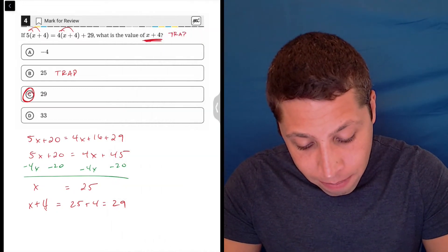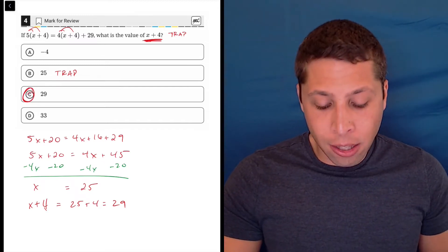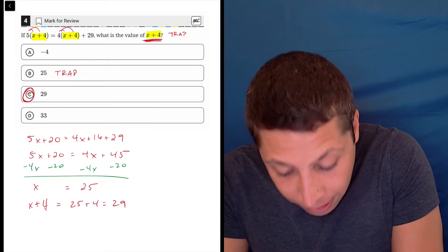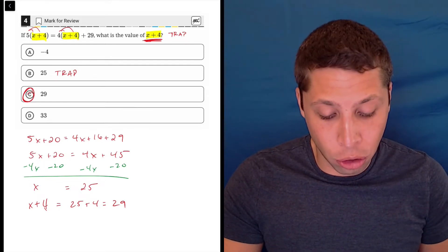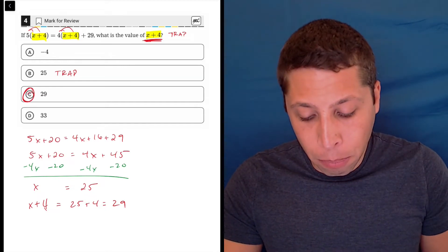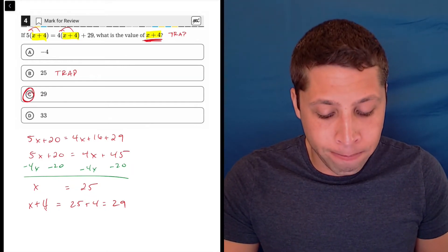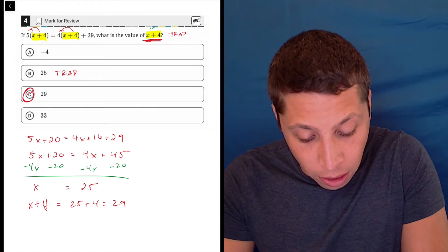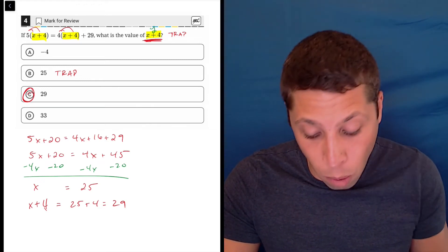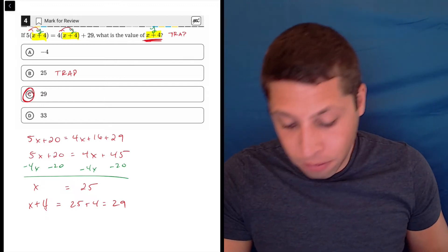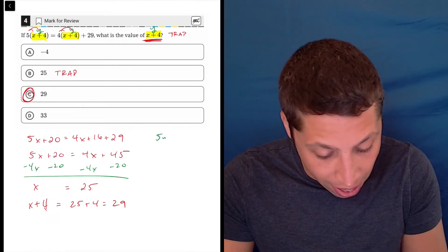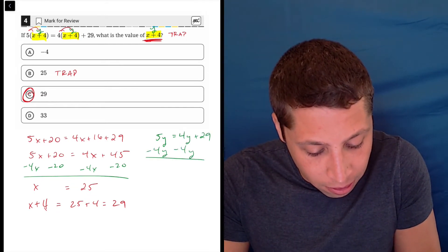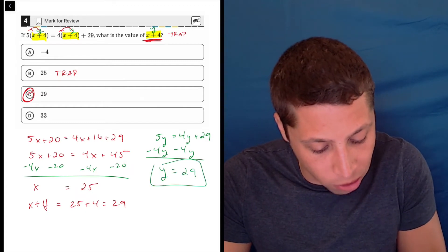Now, some of you are going to do something even kind of weirder, in my opinion. You're going to notice from the start that x plus 4 is what they're after, and it's kind of in the equation itself as this chunk. So you almost pretend it's its own variable. I think the way that most of you will think about this, if you're going to do it this way, is you almost pretend like, let's just say for a second x plus 4 is equal to y. So now my equation isn't this distribution thing. It's 5y equals 4y plus 29. And when you subtract, we just get that y is 29, which was our answer.